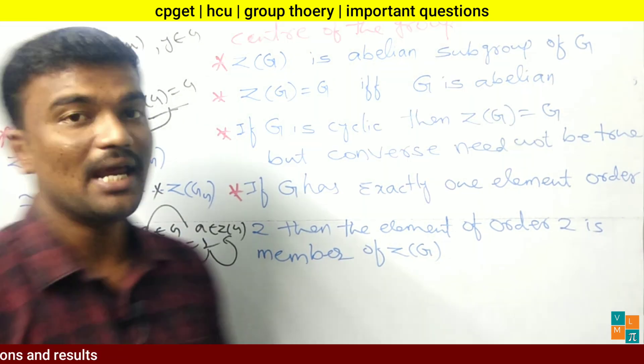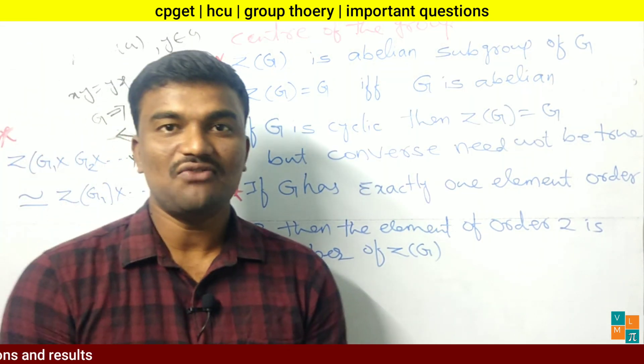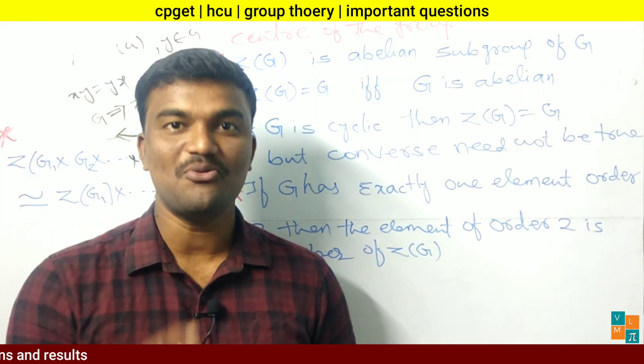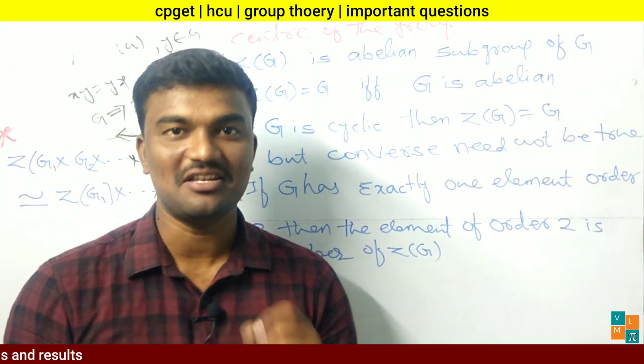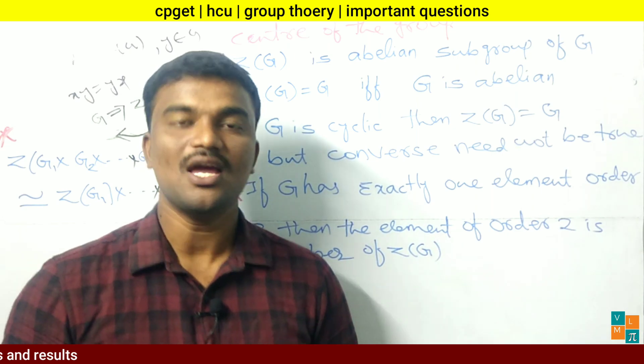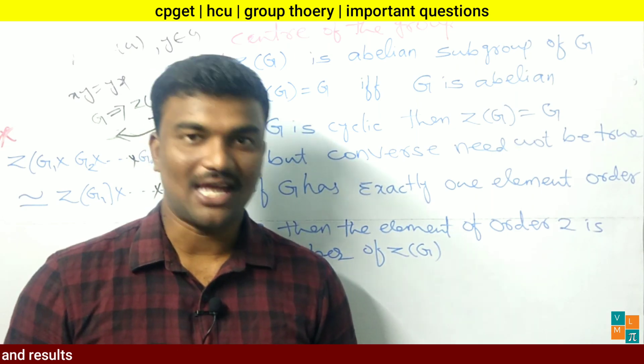Fifth point: Z(G1 × G2 × ... × Gn) is isomorphic to Z(G1) × Z(G2) × ... × Z(Gn), where we find the center of each group individually. These are the most important points of the center of the group. In the next session we will discuss more results of group theory. Thank you.